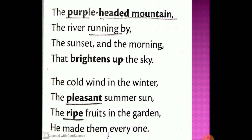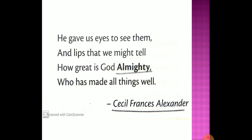The cold wind in the winter, the pleasant summer sun — pleasant means nice or pleasing. The ripe fruits in the garden — ripe means fully grown fruits. He made them every one. He gave us eyes to see them and lips that we might tell, how great is God Almighty — almighty means powerful, and here almighty is used for God only — who has made all these things well.